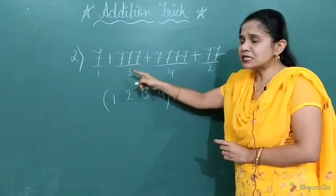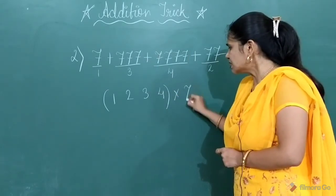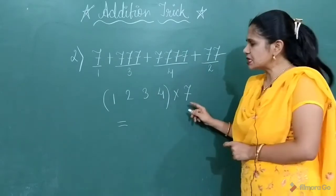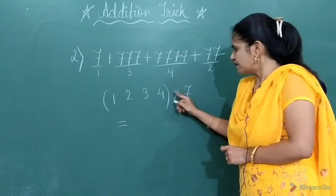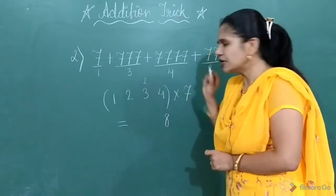And as the digit 7 is repeating here, you have to just multiply by 7. When you will multiply by 7, what you will get? 7 fours are 28. 8, 2 you will carry to the next group.